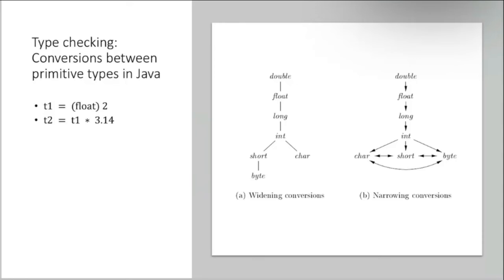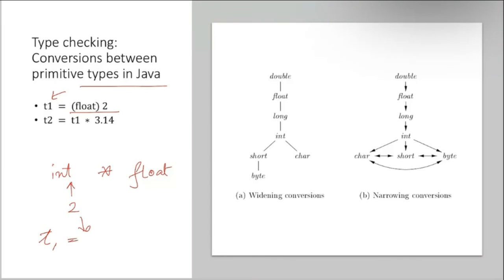For type checking and conversion between primitive types in Java: say t1 is a temporary variable and we multiply an integer (value 2) by a float (3.14). In the background, a temporary variable t1 is generated, the integer 2 is typecast to float type. Now t1 becomes a float, and since 3.14 is also float, we do float * float which gives a float result.